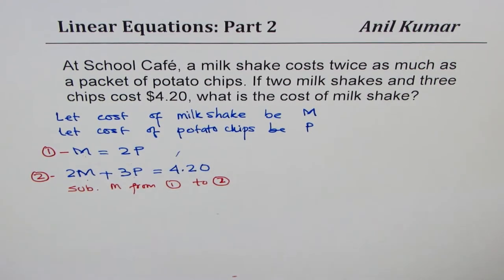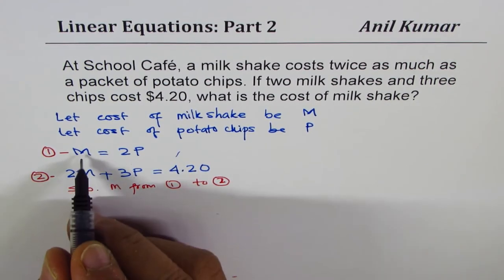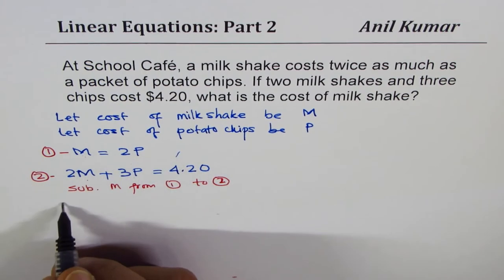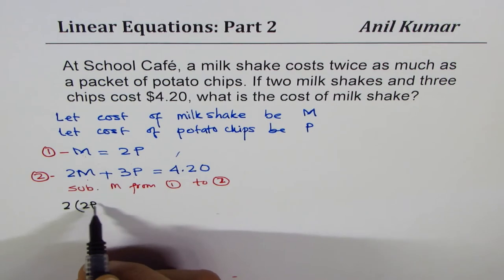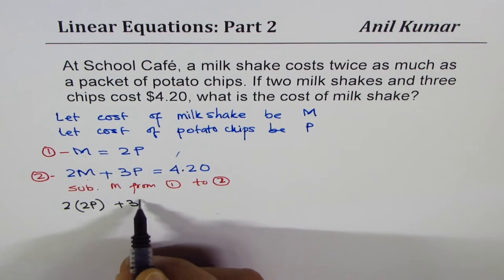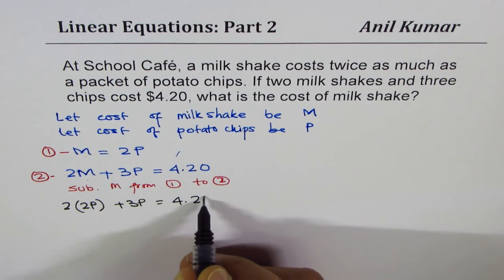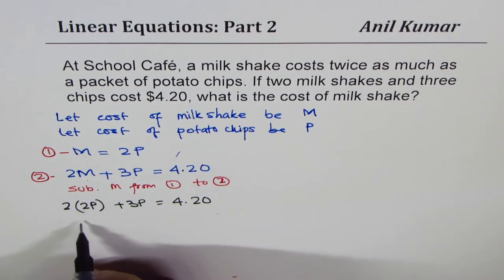We get 2 times M—which is 2P—so we write 2(2P) plus 3P equals 420 cents. That becomes 4P plus 3P equals 420 cents.